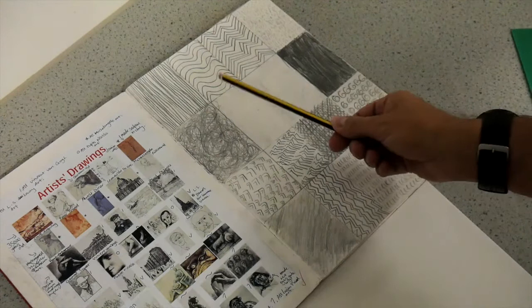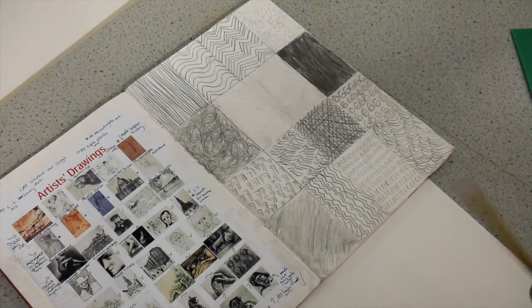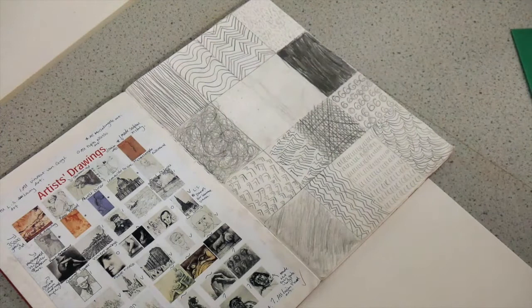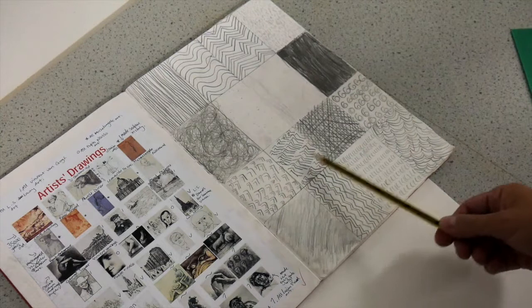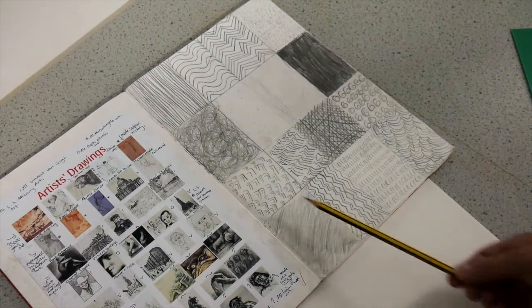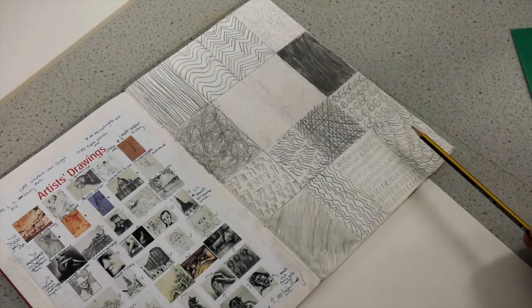So the first thing we're going to do is split up the page into 16 different sections. This needs to be done accurately and we are going to stipulate which of the first eight marks you are going to produce, and then the final eight marks you are going to make up yourself. But they are actually a series of marks, one mark which is repeated a number of times, not little drawings, not letters, not shapes, but a series of marks.